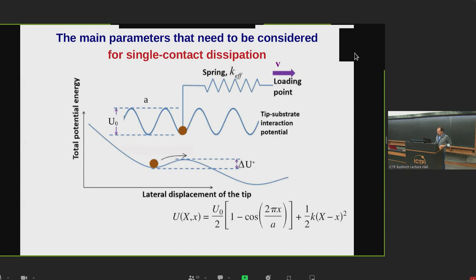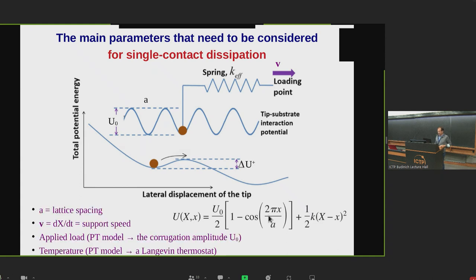The general idea is that the total potential energy contains a corrugation part and a spring part. The parameters that define this simple model are the lattice spacing of the corrugation, the advancement speed of the support, the corrugation is somehow related to load usually, and the temperature will be modeled, for example, with the Langevin thermostat.